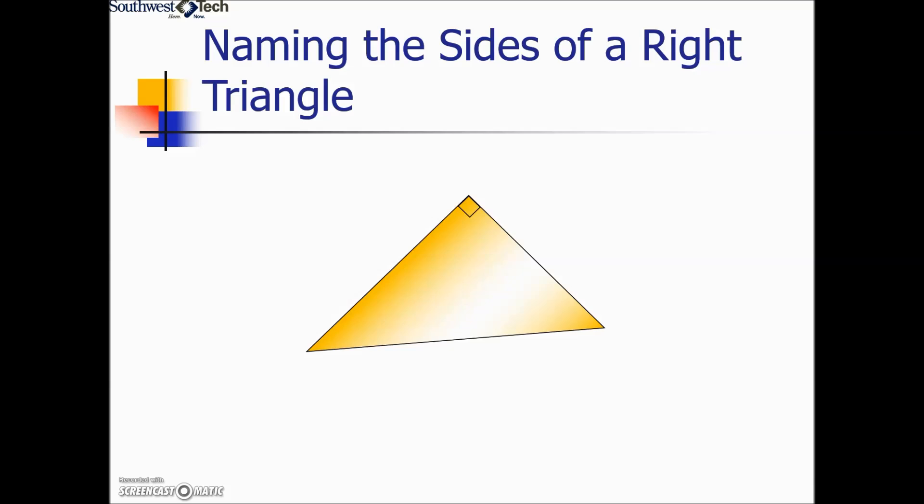Let's look at an example. If we designate angle A as a reference angle, our first mission will be to label the side opposite it. This is going to be on the right-hand side.